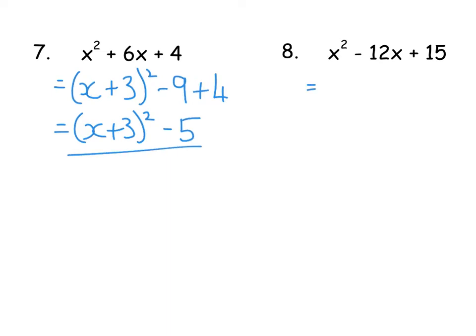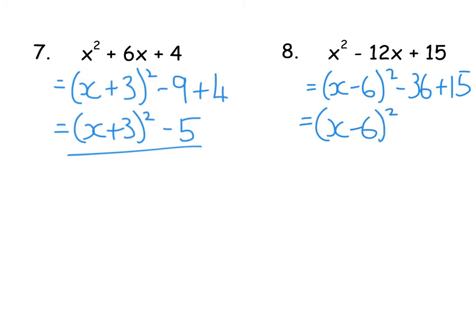For X² - 12X + 15: half of 12 is 6, so it's (X - 6)². 6² = 36, so take away 36, then add on 15. That gives (X - 6)² - 21, since -36 + 15 = -21.